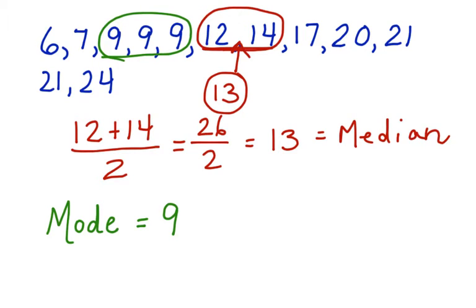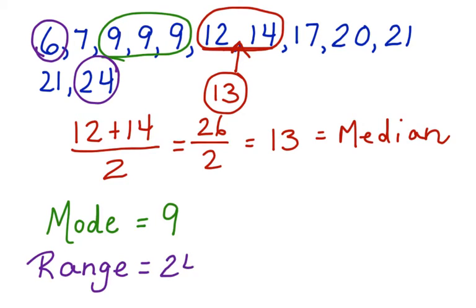And the last measure that we want to find is the range. The range is the difference between the lowest score and the highest. Our lowest score is 6. Our highest is 24. Difference means subtract. 24 take away 6 is 18. Our difference is 18. This is the range of the data.